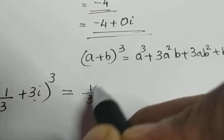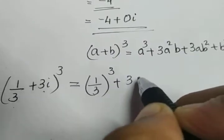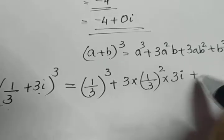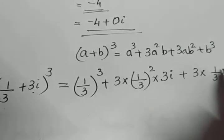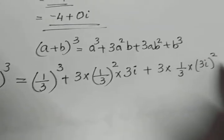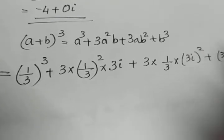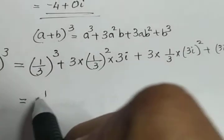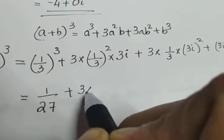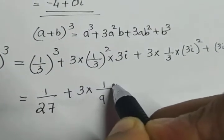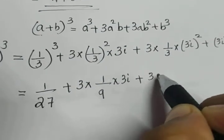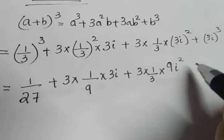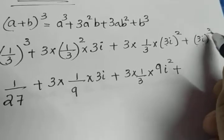So a cubed will be 1 by 3 the whole cube, plus 3 into a squared — that is 1 by 3 the whole square — into b, which is 3i, plus 3 into a, which is 1 by 3, into b squared — that is 3i the whole square — plus b cubed, which is 3i the whole cube. Just expanded the formula a plus b the whole cube. That equals 1 by 27 plus 3 into 1 by 9 into 3i, plus 3 into 1 by 3 into 9i squared, plus 27i cubed.